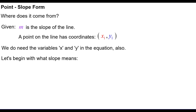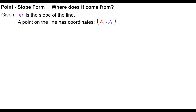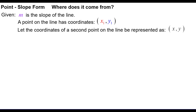Let's begin with what slope means. Slope can be thought of as rise over run — change in y divided by change in x. Subtract the y's over subtract the x's in the same order. With m being the slope and a point x sub 1, y sub 1, let the coordinates of a second point on the line be represented as x, y. That is where we get x and y into the equation.